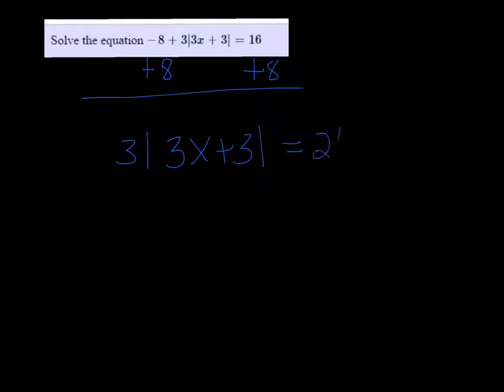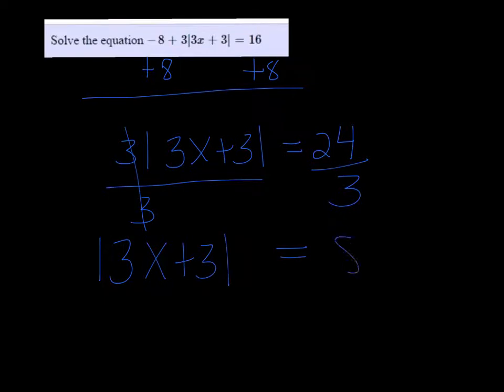So I need to add 8 to both sides. So I get 3 times the absolute value of 3x plus 3 equals 24. Then divide both sides by 3. So I get the absolute value of 3x plus 3 by itself, and the right side is just 8.